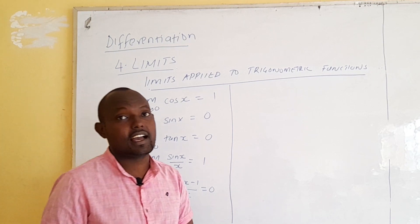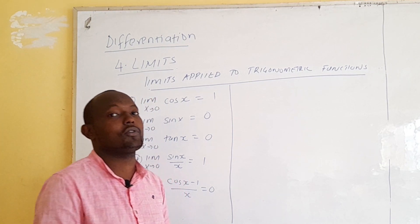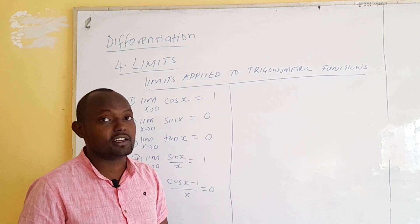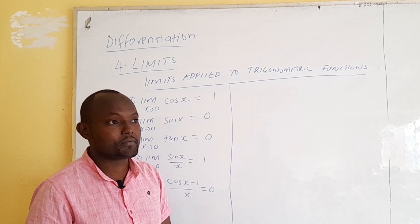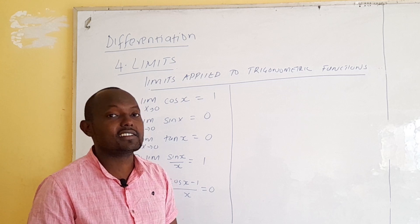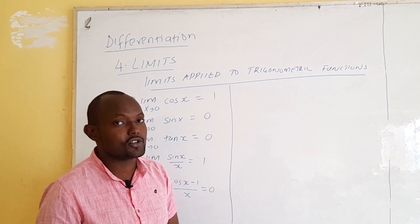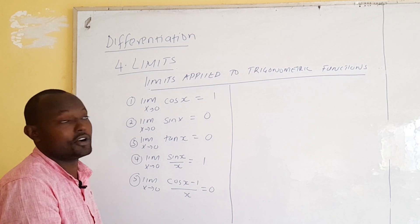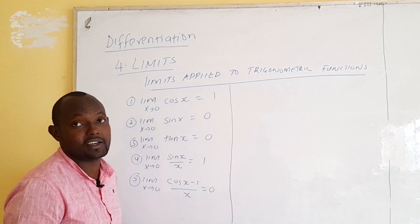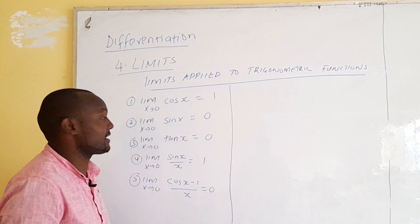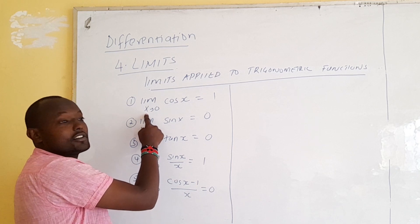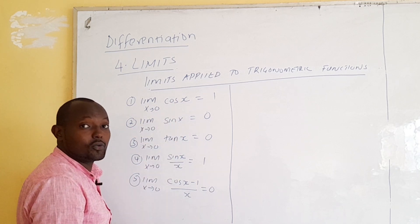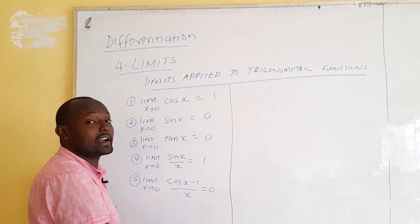Now we are looking at how we solve limits when they are applied in trigonometric functions — specifically sine, cos, and tan. If you have the limit as x approaches 0 of cos x, it will be equal to 1. Why? Because by direct substitution, if you replace x with 0, cos(0) = 1.